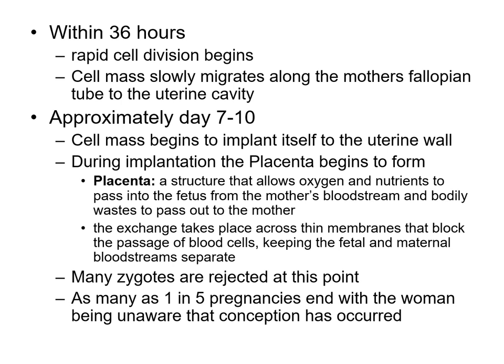The cell mass slowly migrates along the mother's fallopian tubes to enter the uterine cavity. If all things go correctly, the cell mass will implant itself in the uterine wall. Sometimes this doesn't go correctly and the cell mass embeds itself in the fallopian tubes — called an ectopic pregnancy. It's incredibly painful, will not successfully yield a childbirth, and can significantly harm the mother. If all goes to plan, at seven to ten days the cell mass begins to implant in the uterine wall, and a placenta begins to form.